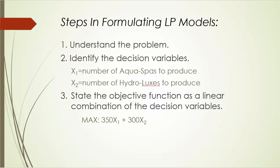Of course, feel free to choose your own names for each of the decision variables, such as x and y. Next, we need to state and formulate the objective function as a linear combination of the decision variables. In this case, the objective is pretty clear: we would like to maximize the total profit. The total profit can be written as a linear function of x1 and x2, that is, 350 times x1 plus 300 times x2.